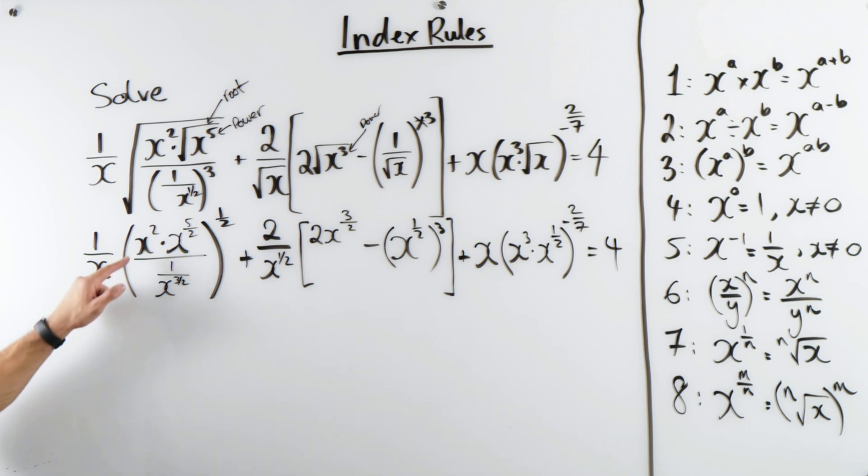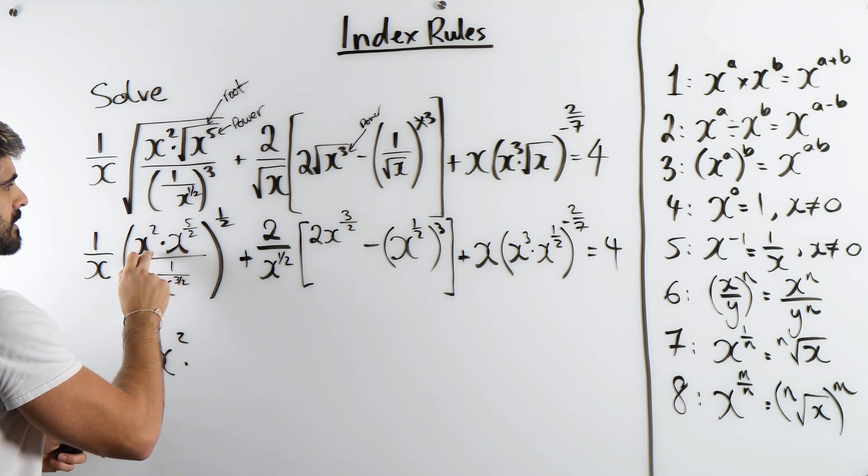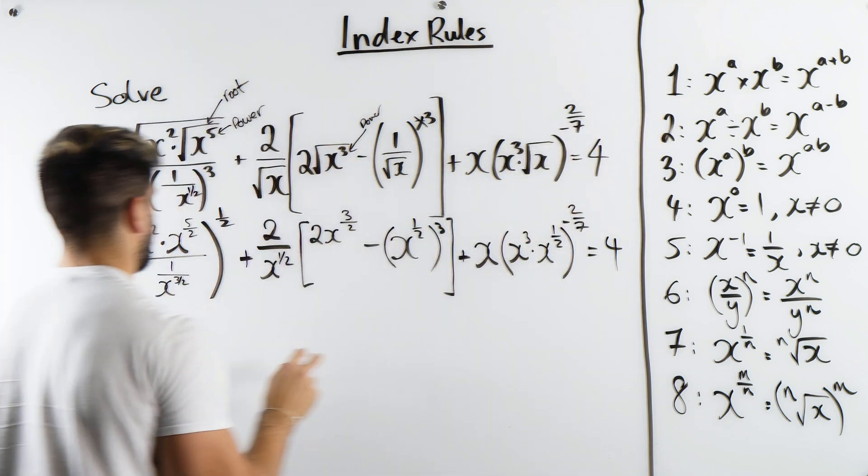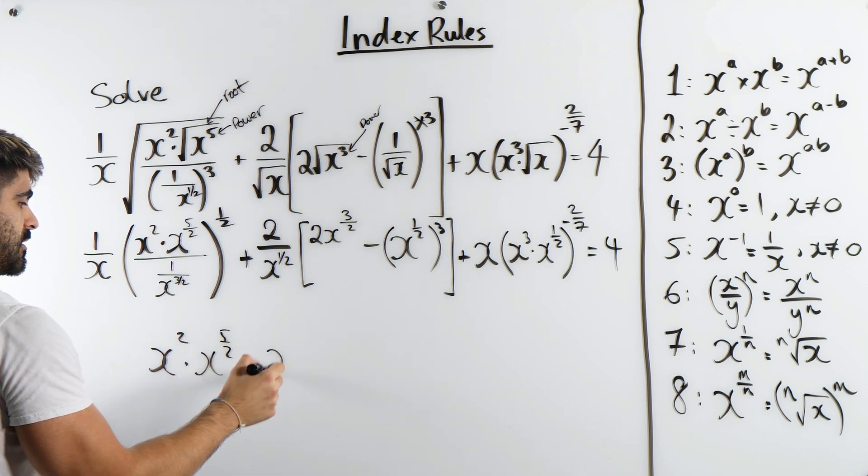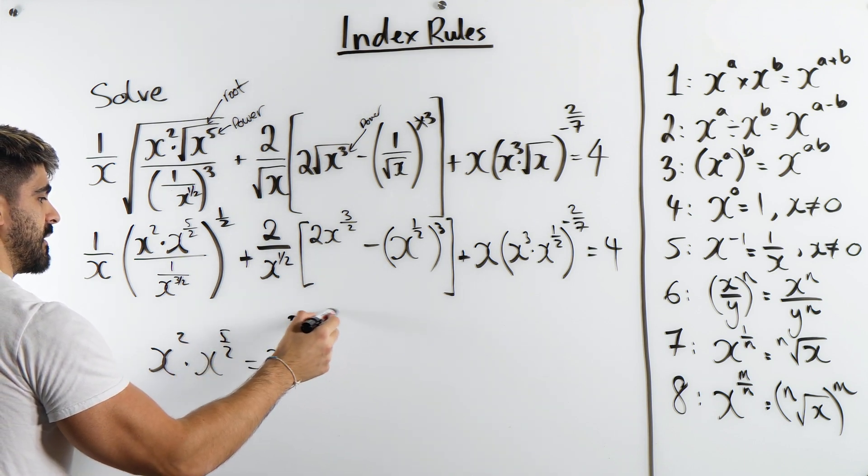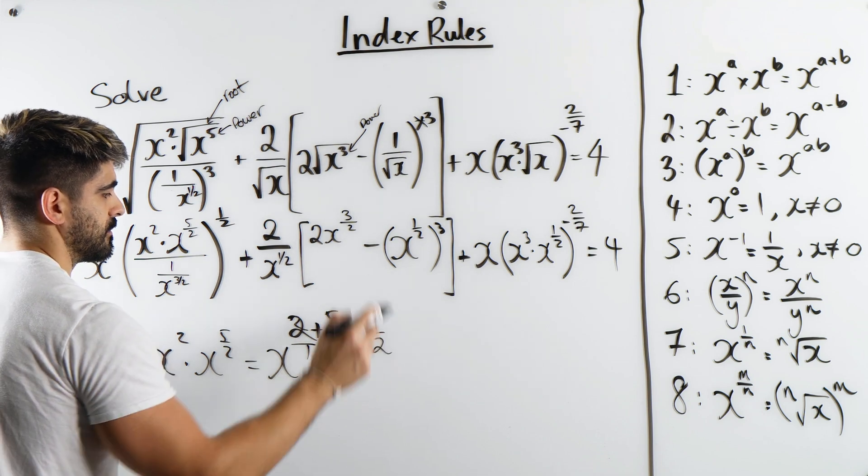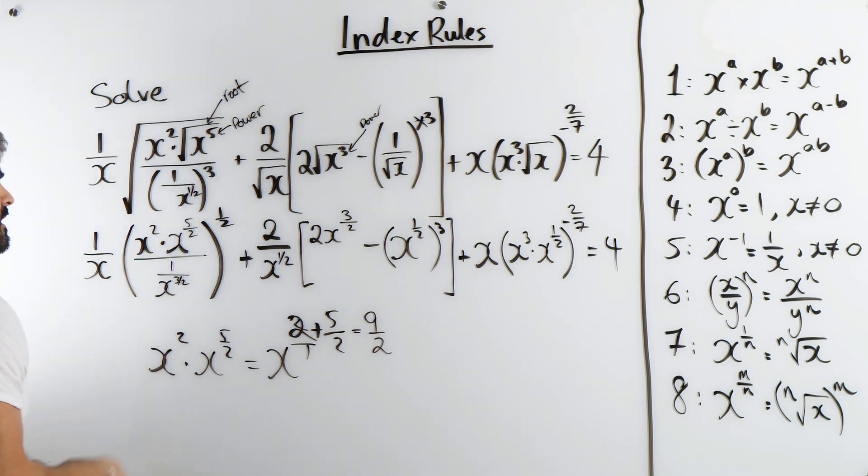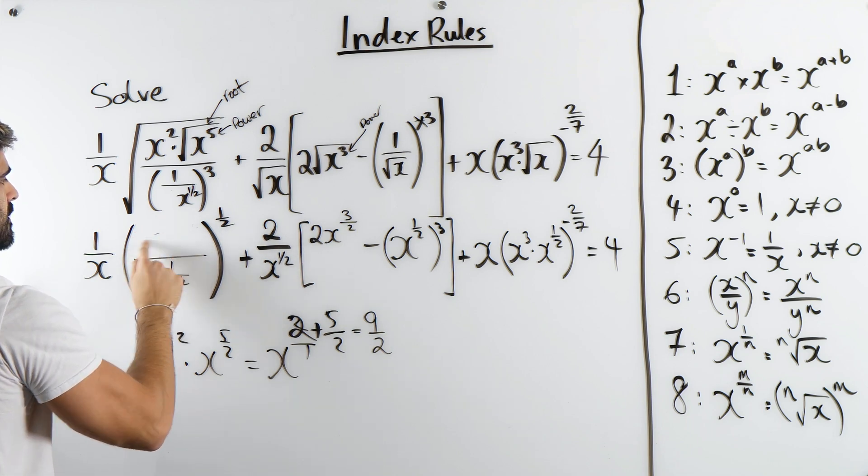Now the next thing I want to look at is what's going on here. We're taking this, so I'll write it here, but then I'm going to rub it out. We have this, which we can simplify. In fact, why don't we do it now? So here we're multiplying two numbers with the same base. We're using rule 1. We are adding the powers 2 plus 5 over 2. So instead of, I'll just do it here. So we're doing 2 plus 5 over 2. So 4 plus 5 is 9 over 2. So let's just replace that here. x to the power of 9 over 2.